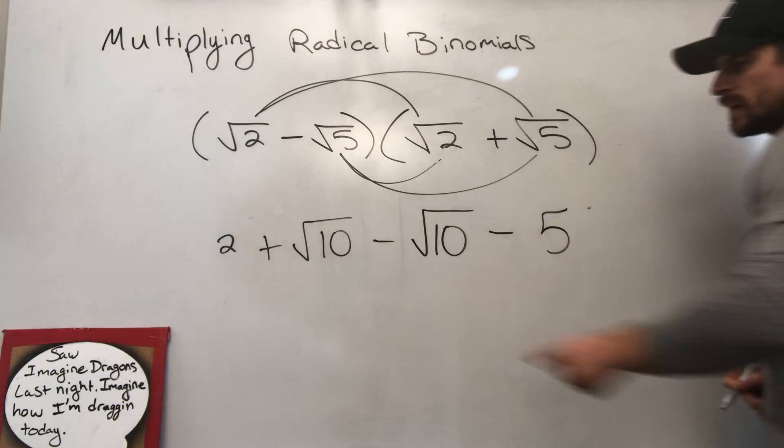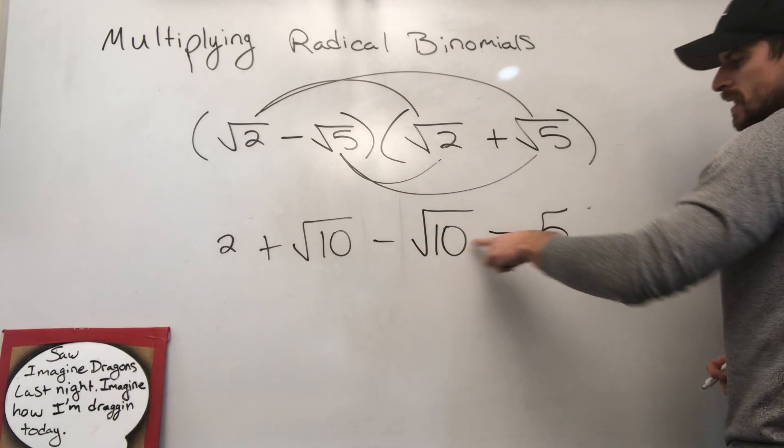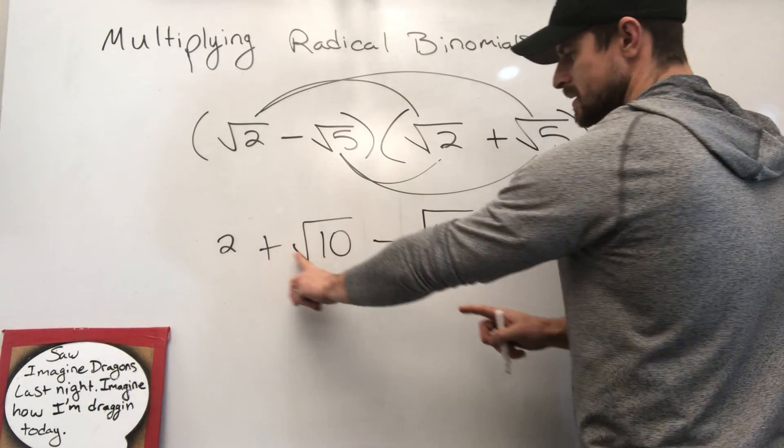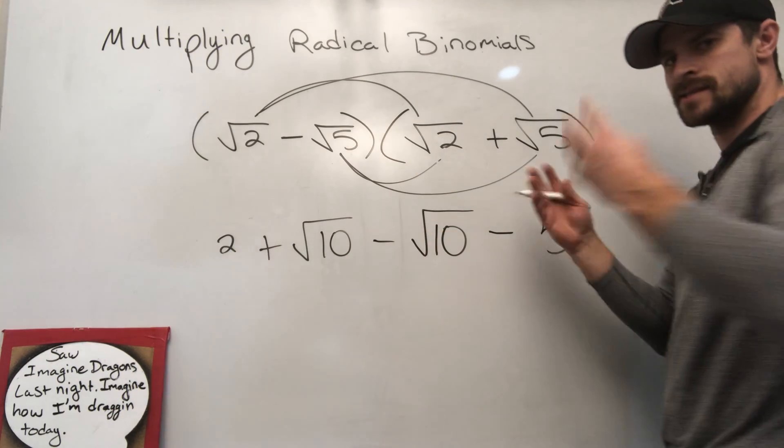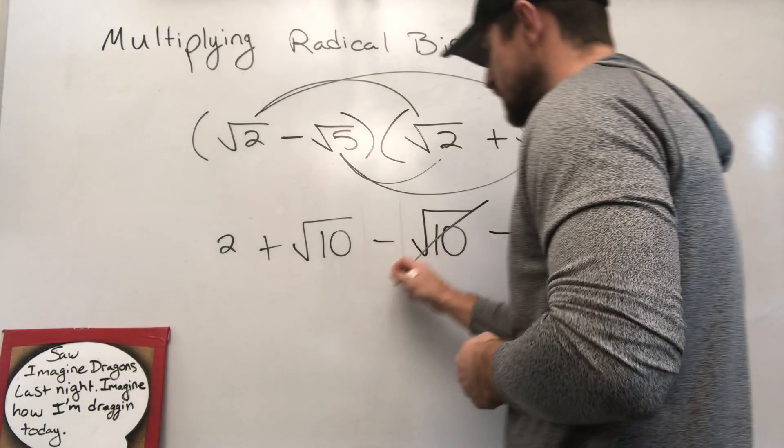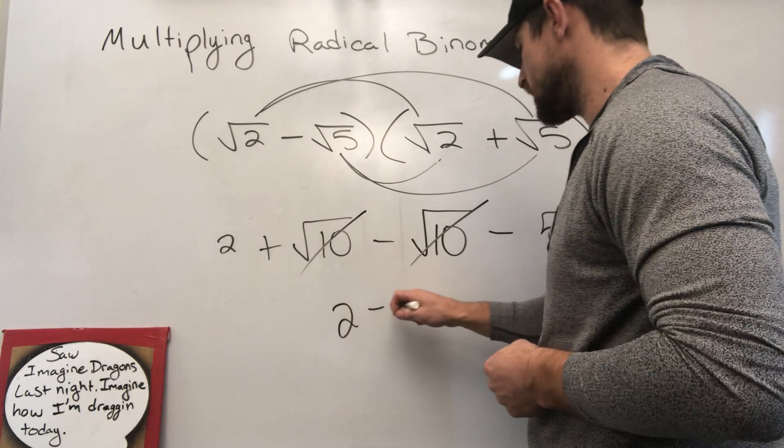All right, so now what I have is this. I've got 2 plus the square root of 10 minus the square root of 10 minus 5. I'm looking at a positive square root of 10 and a negative square root of 10. Those are going to combine and make 0. They're going to cancel one another out, leaving me with just 2 minus 5.